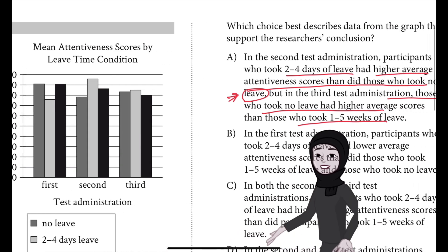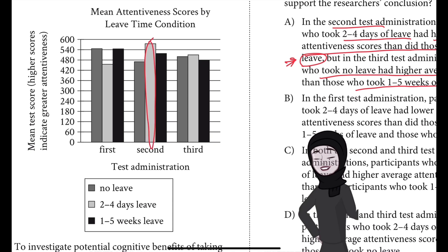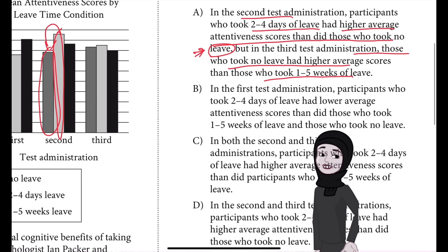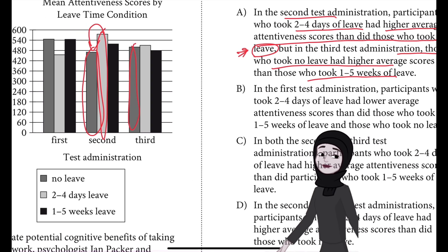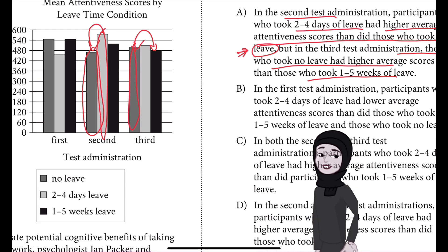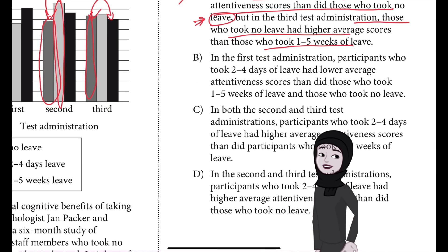For example, two to four days of leave in the second administration — they are comparing to no leave. And in the third administration, they are comparing no leave to those who took one to five weeks of leave. The problem is that neither of these findings has a direct bearing on the researchers' conclusion, which concerns a comparison of participants who took two to four days of leave with those who took one to five weeks. So choice A is incorrect.